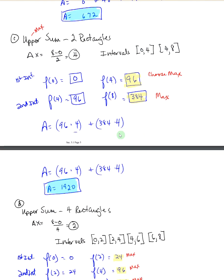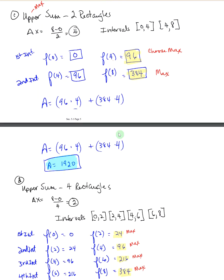Part C says now you're going to do two rectangles but you're looking at the upper sum. This didn't change from part A. Same idea. You do your same intervals but instead of choosing minimum you are choosing the max. So now you have 96 times 4 and 384 times 4 and you get this for your upper area.